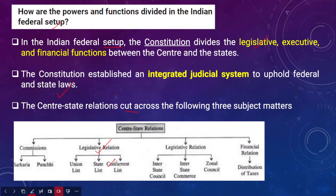The second category is administrative relations. The Constitution itself has established an Interstate Council under Article 263 of the Indian Constitution. Apart from Article 263, we also have the interstate commerce councils. All these factors relate to the administrative relations between the union and the states.